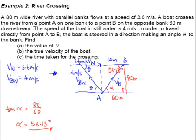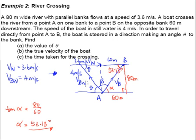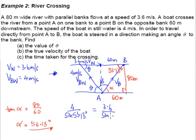We can't find theta directly, so we first find the intermediate angle beta using the sine rule. We know this angle is 53.13 degrees, VBW is 4, and VW is 3.6. Applying the sine rule: 4 over sin(53.13°) equals 3.6 over sin(beta). Cross-multiplying and taking the inverse sine gives beta equal to 46.05 degrees.